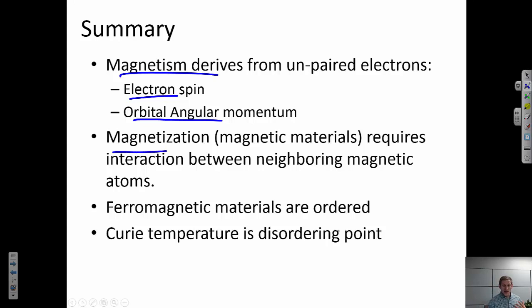Now, when we think about magnetization, bulk magnetization in solid materials, we think about this as requiring an interaction between these neighboring magnetic atoms. And that's what we call a ferromagnetic material. That's when those atoms' magnetic moments are all aligned in the same direction. All ferromagnetic materials, if I heat them up to high enough temperature, will disorder. That disorder point is what we call the Curie temperature. I can have other sorts of magnetic order, but we're not going to get into those in this case.